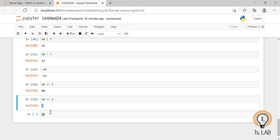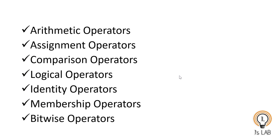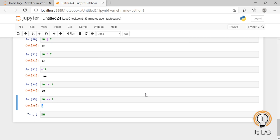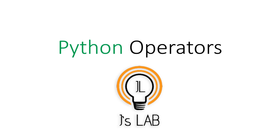In this video we discussed the different operators used in Python in detail with examples: arithmetic operators, assignment operators, comparison operators, logical operators, identity operators, membership operators, and bitwise operators. If you have any comments or suggestions please write in the comment section, and if you like my videos please subscribe to my channel for more videos. See you in the next video — bye, thank you.